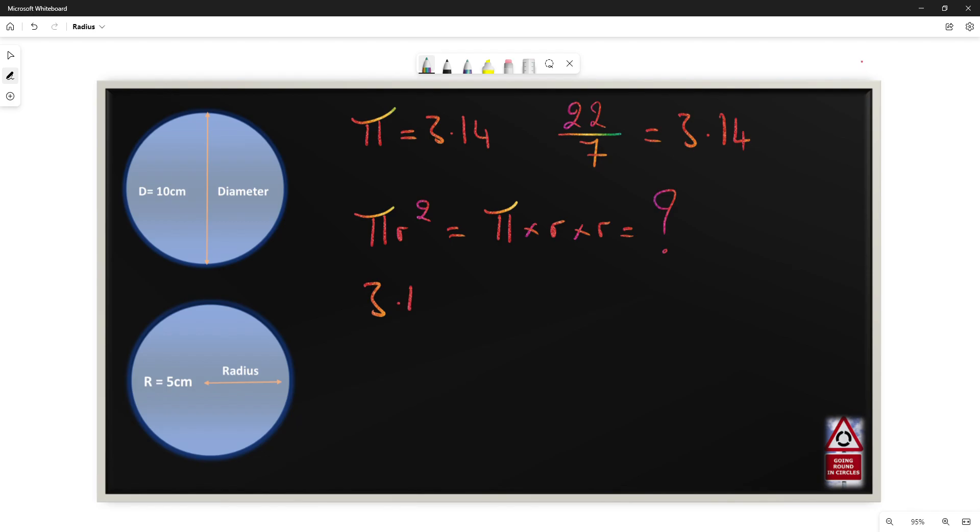So this quite literally translates as 3.14 times 5 which is the radius, times 5 which is the radius again by itself, equals 72.5 centimeters squared. And always remember to put the square because that represents area.